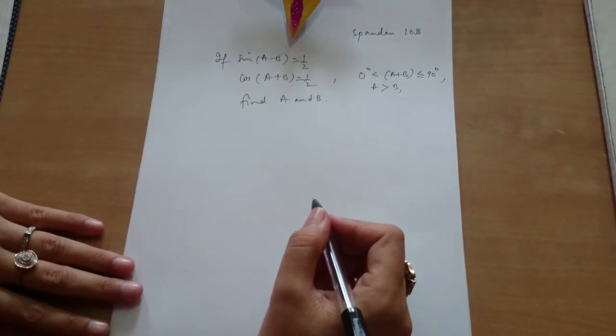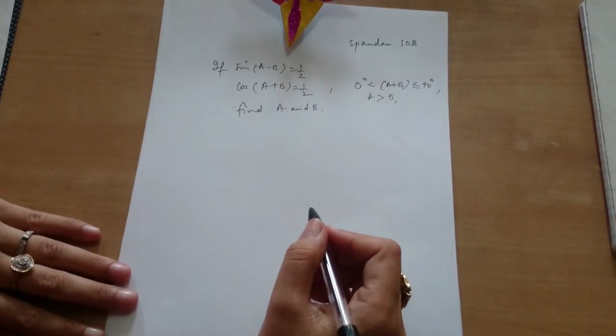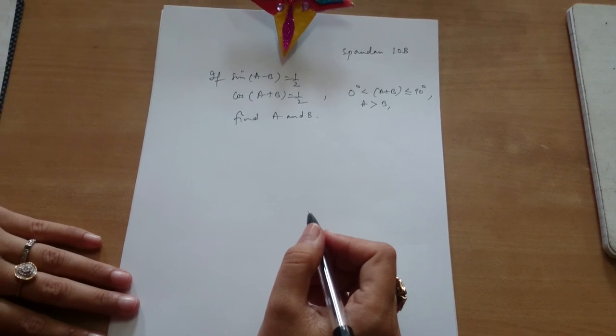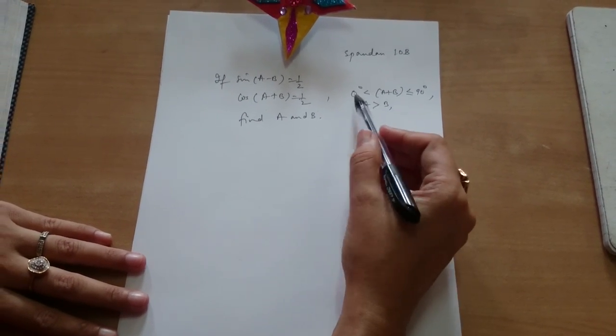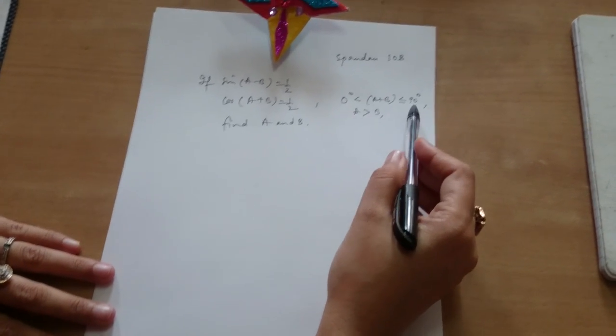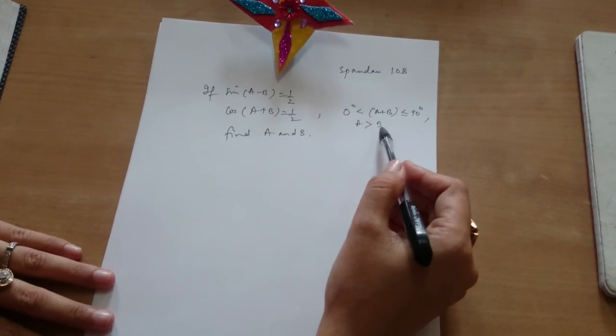Spandan, please read the question. If sin(a - b) is equal to half, cos(a + b) is equal to half, find a and b. You are given this condition also: 0 less than a plus b less than or equal to 90 degrees, and angle a is greater than b.